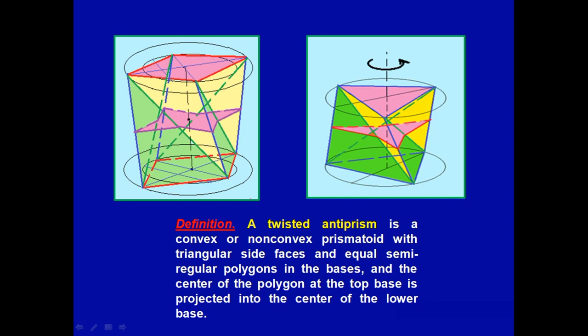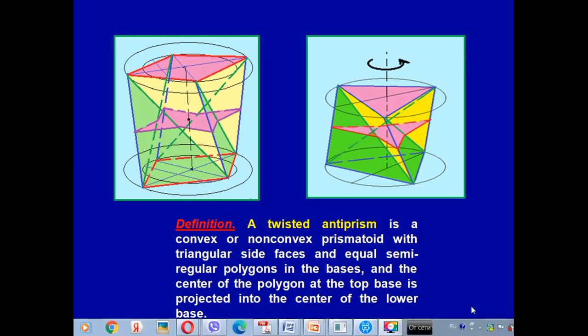Next, a twisted antiprism is a convex or non-convex prismatoid with triangular side faces and equal semi-regular polygons in the bases. And the center of the polygon at the top base is projected into the center of the lower base.